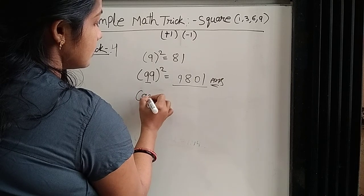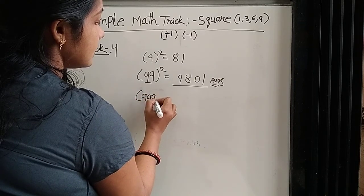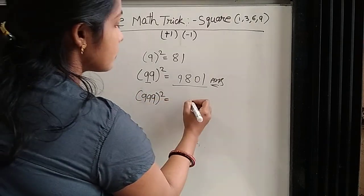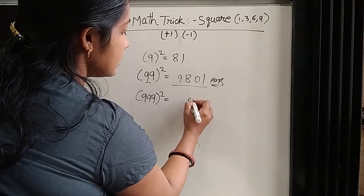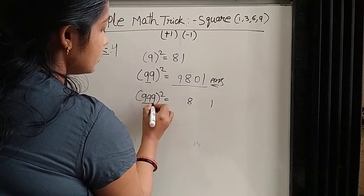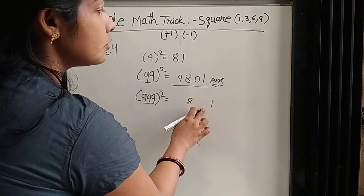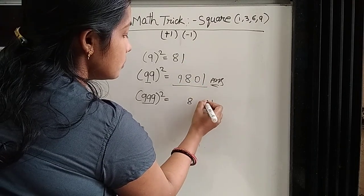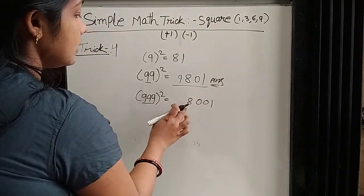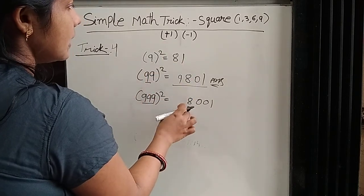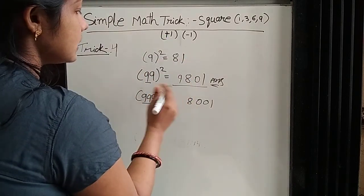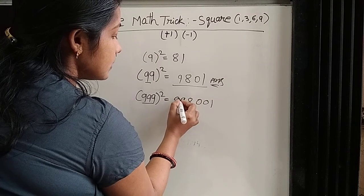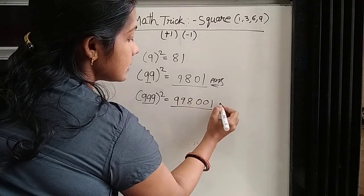If there is 3 9: same process, 9 square is 81, and there are two 9s. So we write 20 — because 1 minus 1 is 0 — so 20. And 8 plus 1 is 9 — for 2 9, we write 29 here. This is the answer.